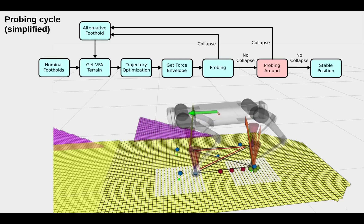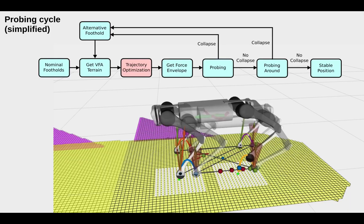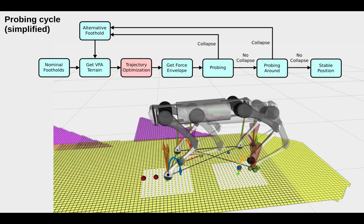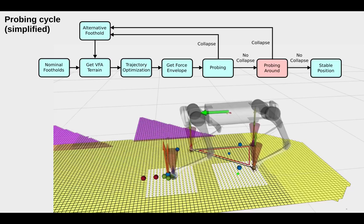A trajectory optimization computes the force envelopes required for one stride of motion. An MPC is then used for motion planning and for probing the terrain with the computed force envelopes.